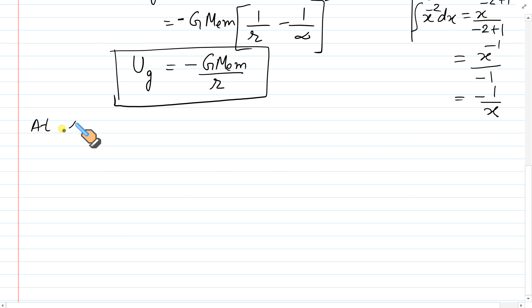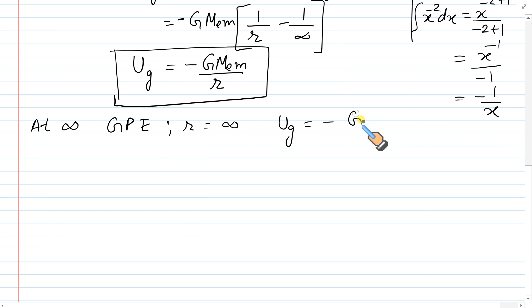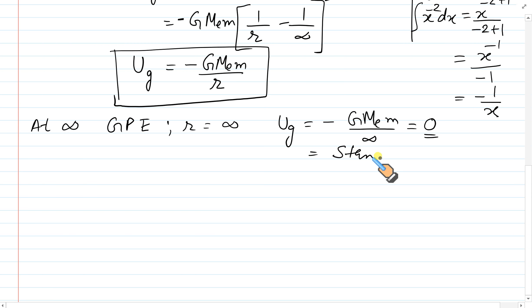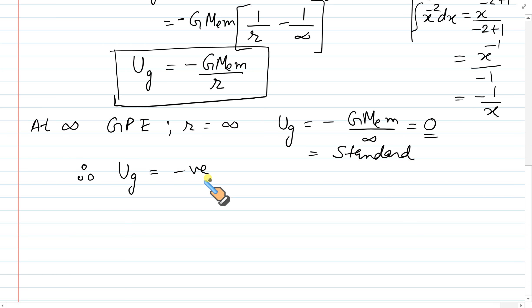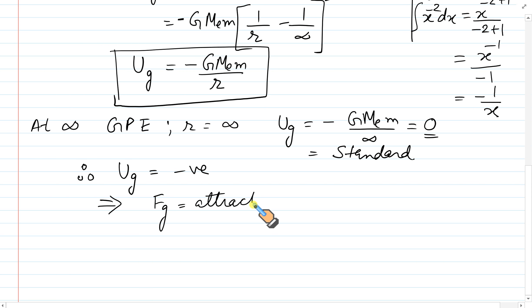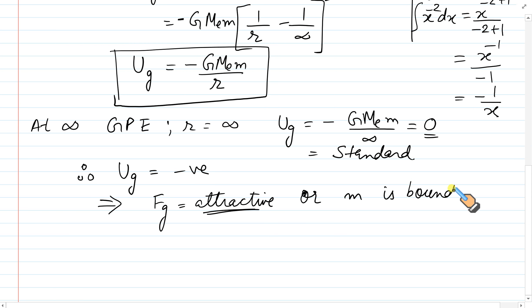At infinity, gravitational potential energy = −G·Me·m / ∞ = 0. So gravitational potential energy at infinity is zero — this can be taken as the standard reference. یہاں سے potential energy شروع ہوتی ہے، اس لیے gravitational potential energy ہمیشہ negative ہے۔ Negative GPE کا مطلب ہے gravitational forces are always attractive and small m is bound to Me.